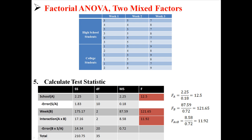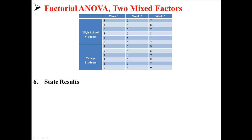For school, we divide 2.25 by its error term of 0.18. For week, we take 87.59 and divide by 0.72. For the interaction, we take 8.58 and divide by 0.72 again. We get F-values of 12.5, 121.65, and 11.92.